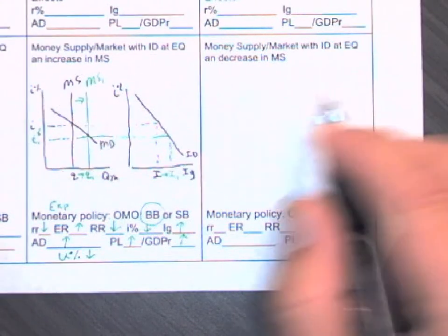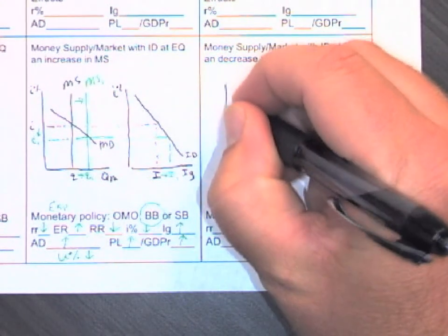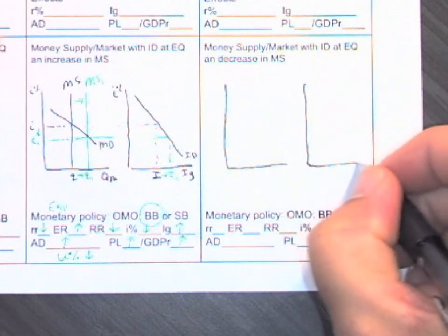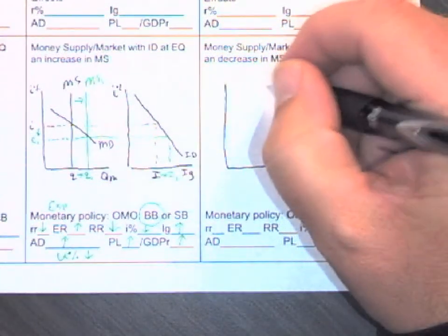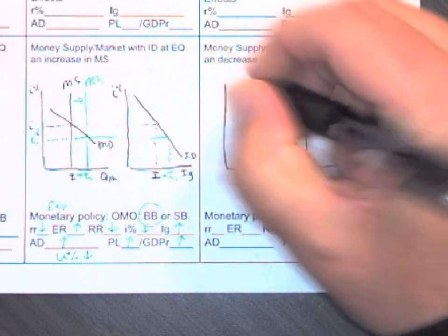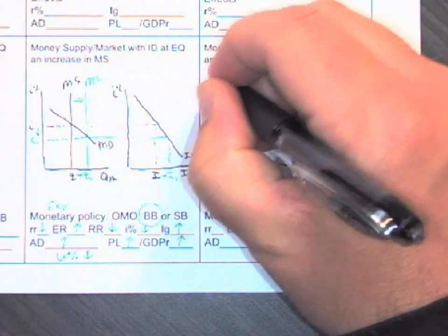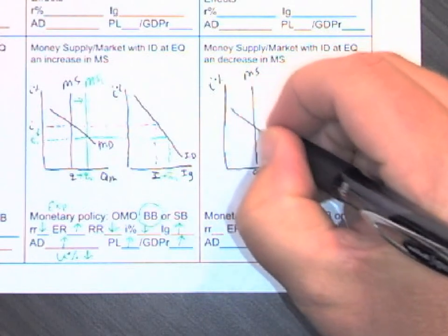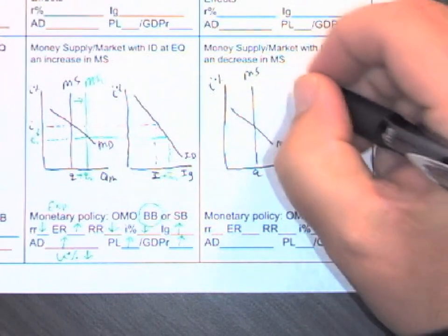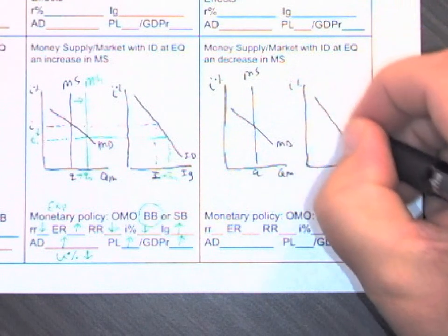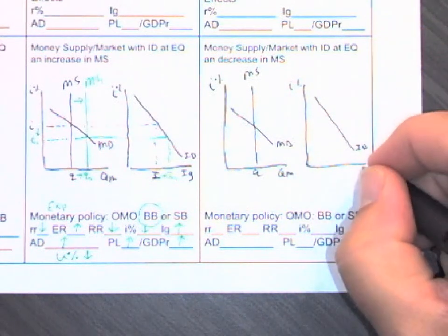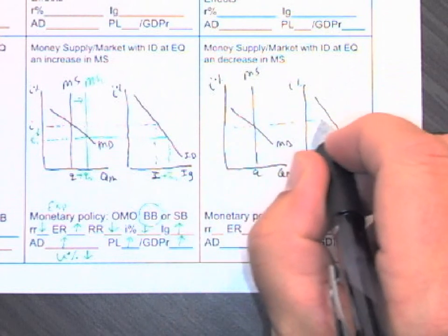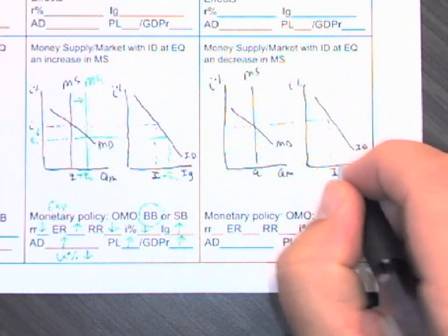So now we're going to do money supply or the money markets with investment demand. Set up my two graphs. Got my money supply, nominal interest, money demand. Investment demand shows how much gross private investment exists at that level of interest.